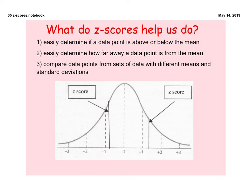Okay, so what do z-scores really help us with? Well, number one, it's easy to determine if a data point is above or below the mean. Remember, if a z-score is positive, it's above the mean, and negative, it's below. So immediately, when you have your z-score, which is a numeric value, you're going to know if you are above or below the mean.